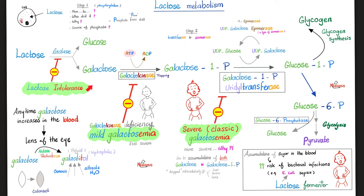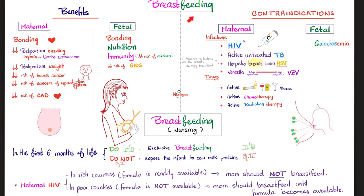Now let's talk about severe or classic galactosemia and breastfeeding contraindications. If you look at all contraindications to breastfeeding, almost all of them are on the maternal side — active tuberculosis, active herpes lesion on the breast, HIV/AIDS, etc. The only fetal cause that makes breastfeeding contraindicated is galactosemia in the baby, because mother's milk contains lactose and this baby cannot digest lactose.